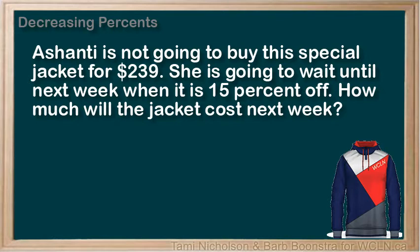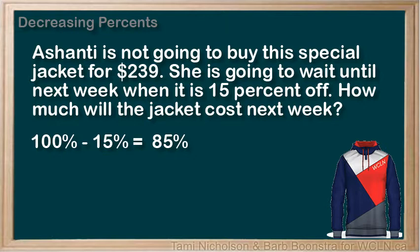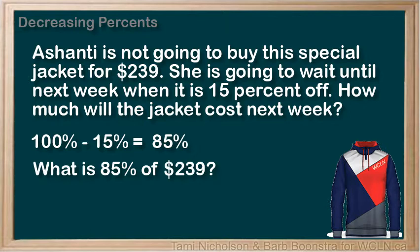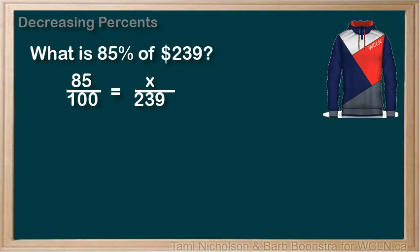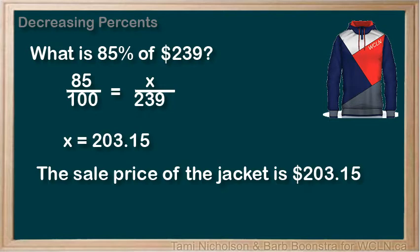We'll do an example. Ashanti is not going to buy this special jacket for $239. She is going to wait until next week when it is 15% off. How much will the jacket cost next week? The price of the jacket is being decreased by 15%, therefore it is at 100 minus 15, or 85% of its original cost. The percent equation becomes: what is 85% of 239? We will substitute in our values and solve for the unknown, so the price becomes $203.15.